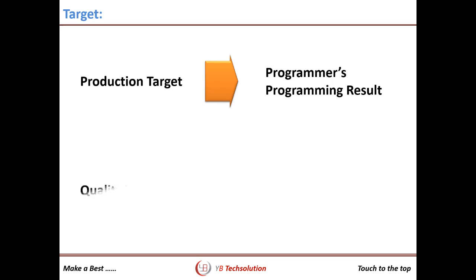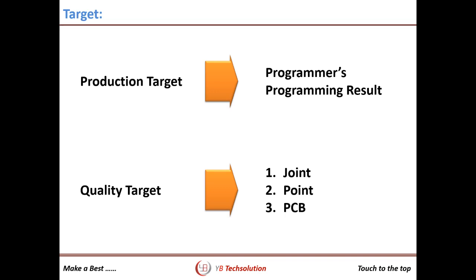The quality target is controlled as per the current PPM. There are three types of PPM calculation methods: joint method, point method, and PCB method. When I was working with a Korean company in India, our internal PPM was around 5000. An automobile customer told us it should be less than 100 PPM. Later, through consulting, I understood they were controlling PPM by joint method — and at that time our company's PPM was actually 20 by joint level.